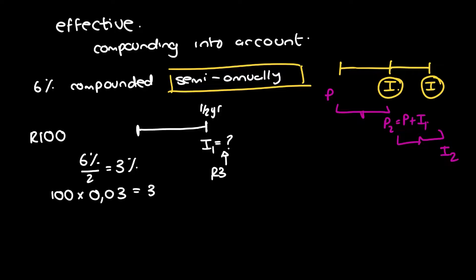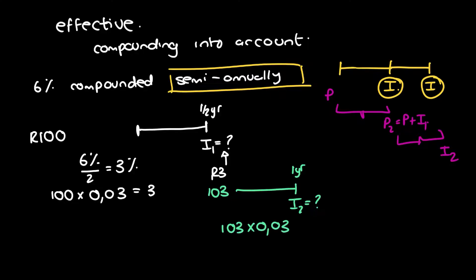That interest is reinvested, so 103 grand goes in for the next six months to reach the one-year mark, giving us I2. We work it out: 103 times 0.03 — still 0.03 because it's still for half a year, 6% divided by 2 — and that gives us 3.09.